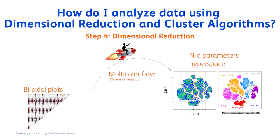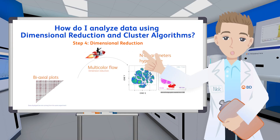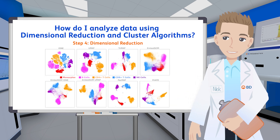Now that our sample is cleaned up and concatenated, it's time for dimensional reduction. The goal of dimensional reduction is to easily visualize our multi-parameter data in a single two-dimensional plot while preserving the overall structure of the data as much as possible. Events with a similar multi-dimensional expression pattern are grouped together within the dimensionally reduced data space.